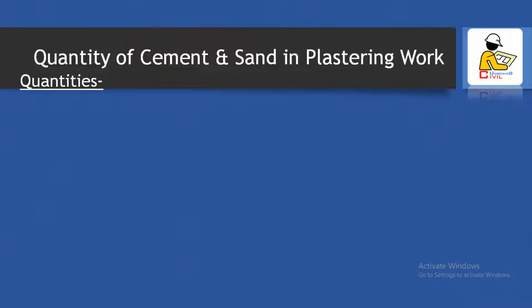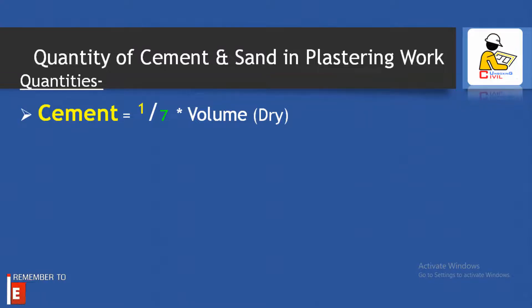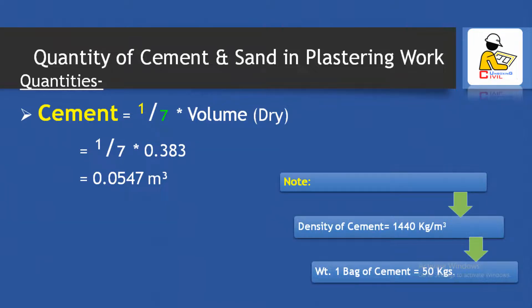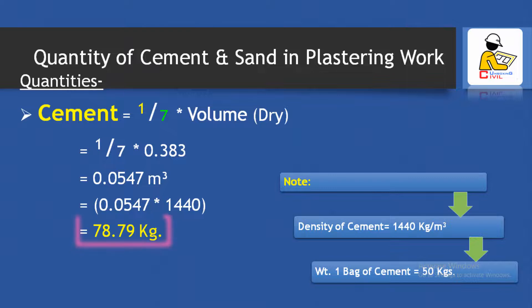The cement quantity formula equals (1/7) × dry volume, which is (1/7) × 0.383 = 0.0547 cubic meter. Since the density of cement is 1440 kg per cubic meter and one bag weighs 50 kg, multiplying 1440 × 0.0547 gives 78.79 kg. Dividing by 50 kg gives 1.58 bags of cement for the plastering work.